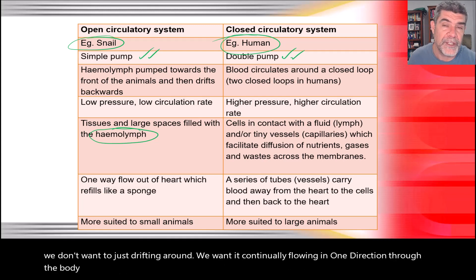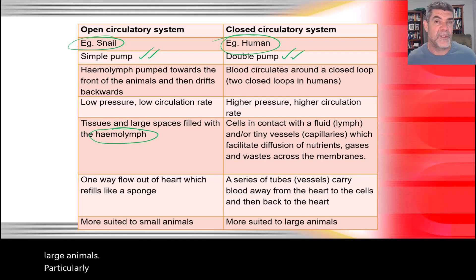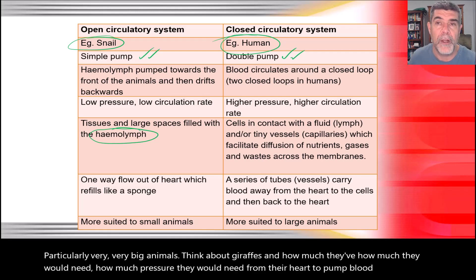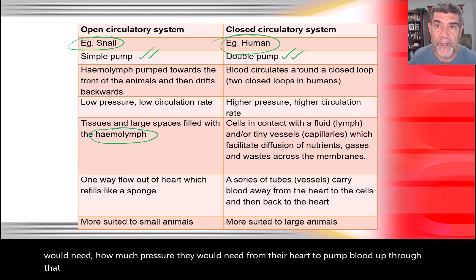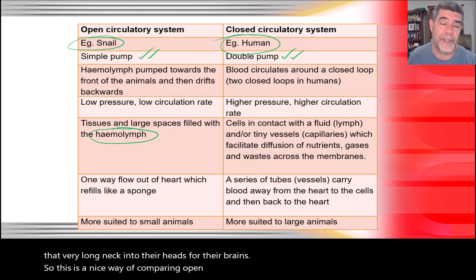Because of the efficiency of the closed system, it's much more suited to large animals — particularly very large ones. Think about giraffes and how much pressure they need from their heart to pump blood up through that long neck into their brain. This is a nice way of comparing open and closed circulatory systems. Thanks for watching.